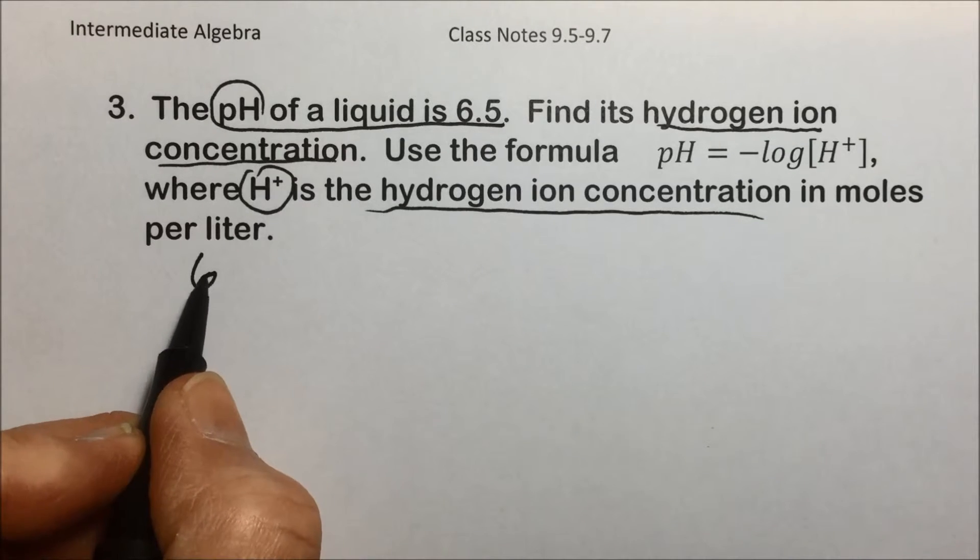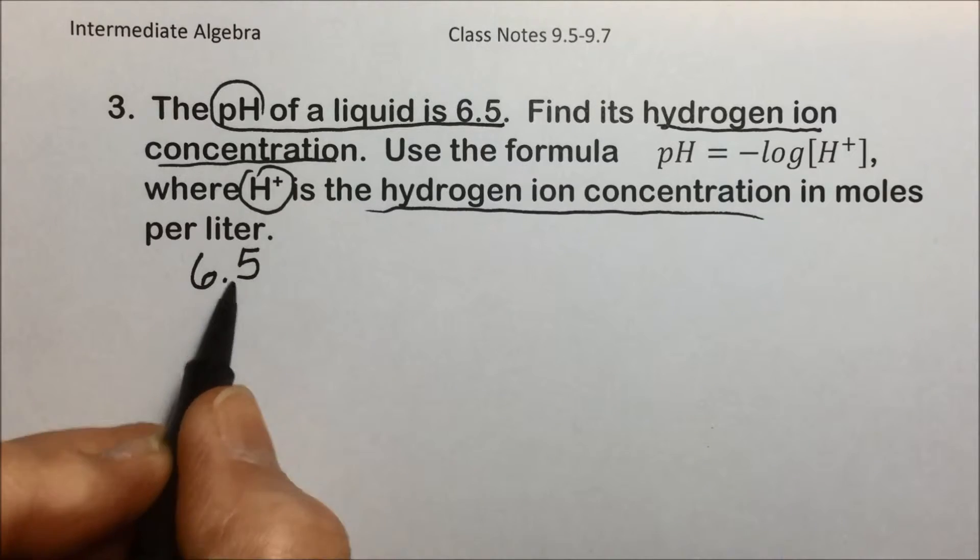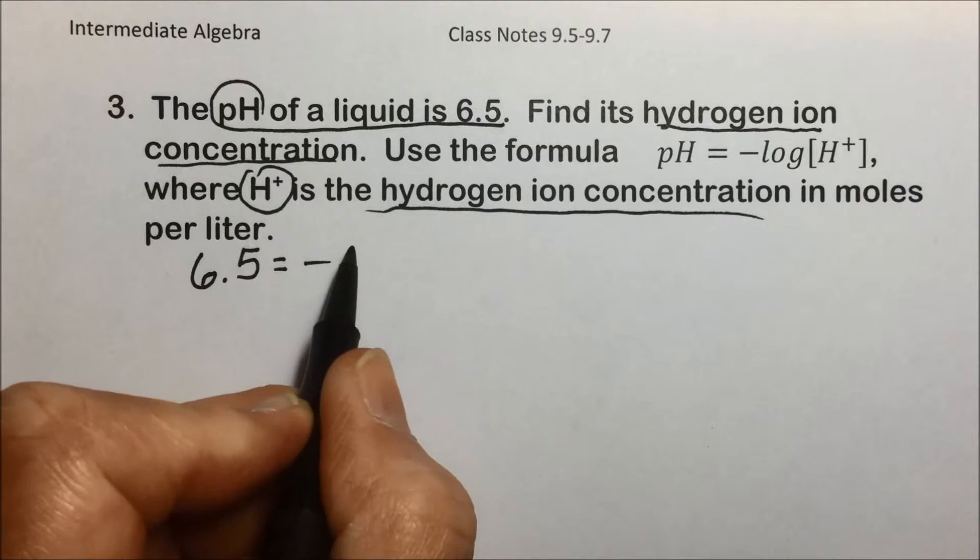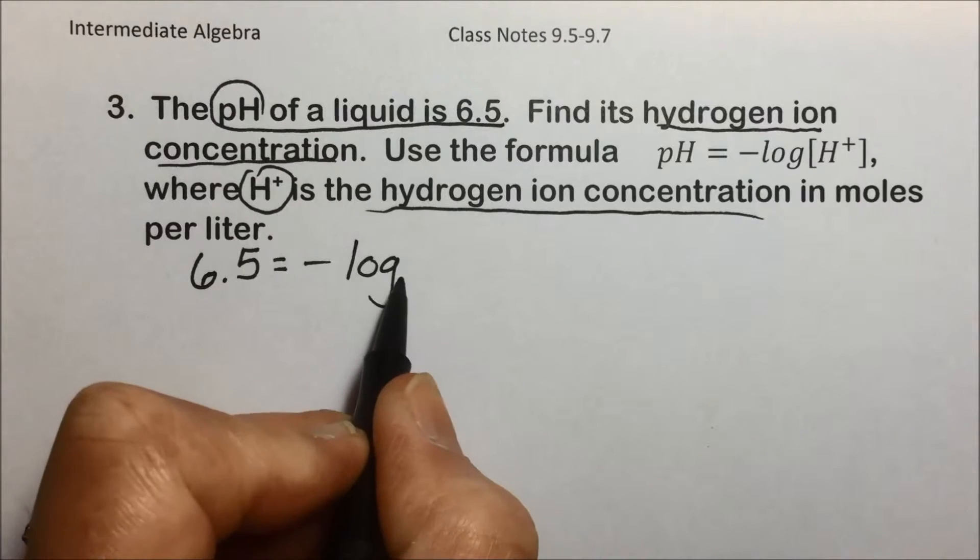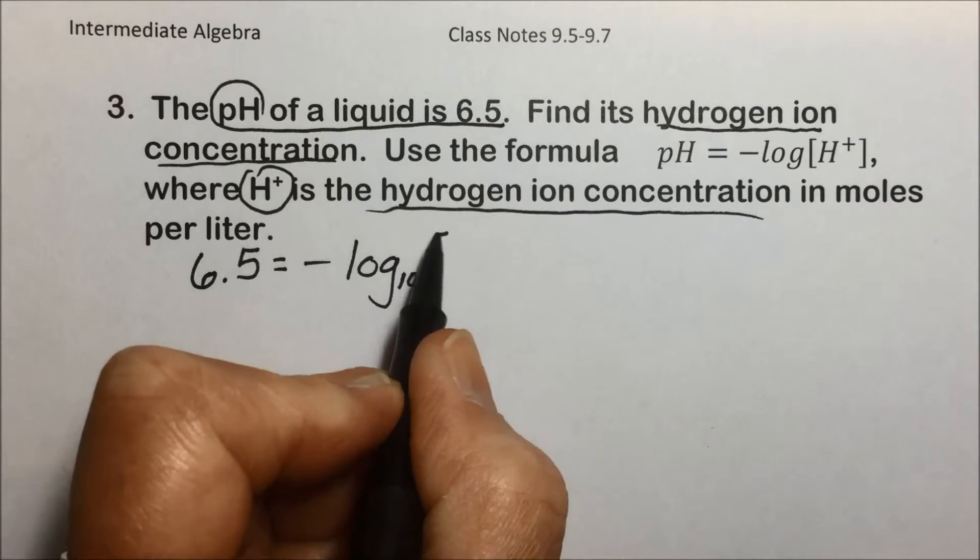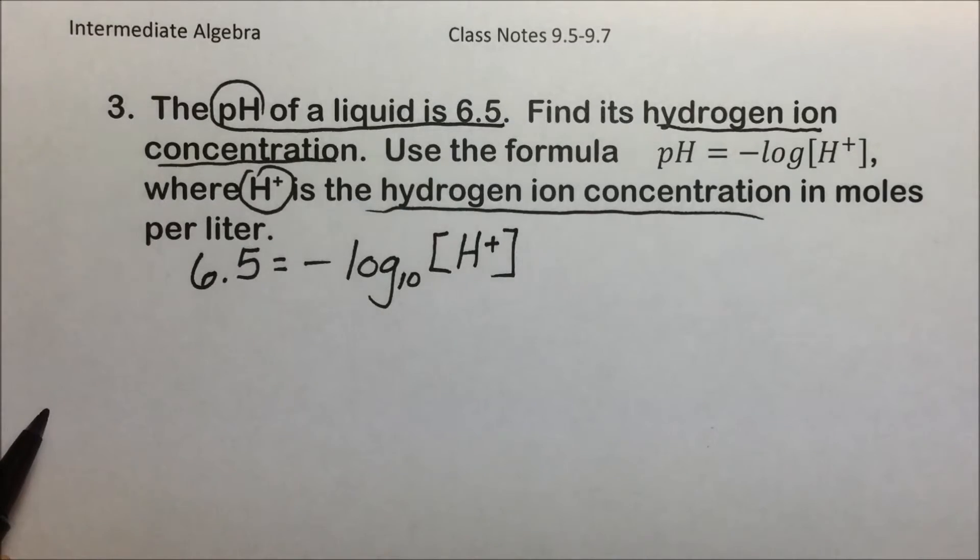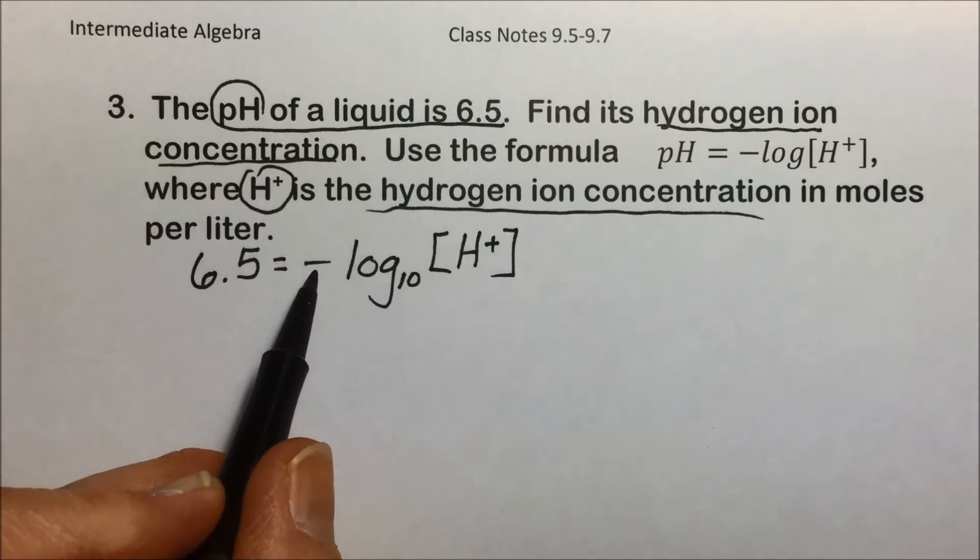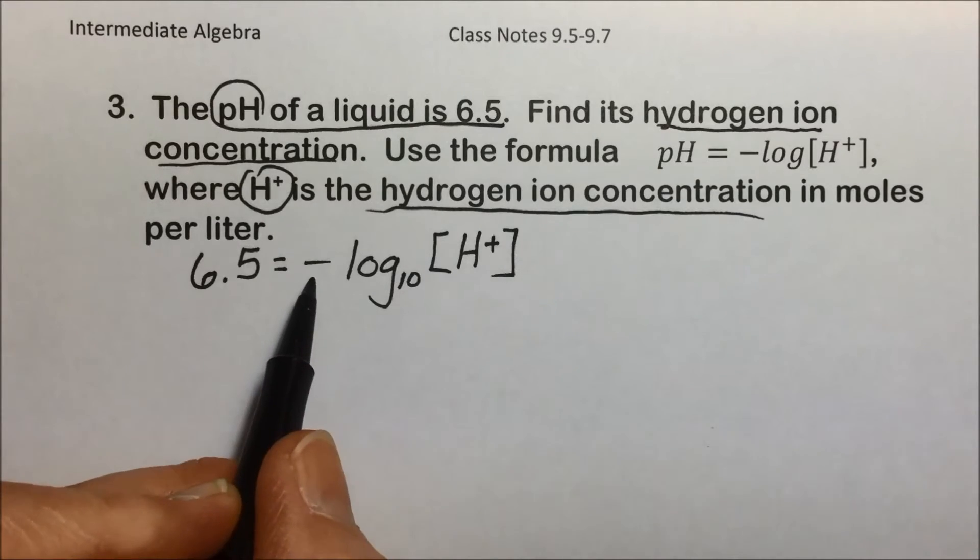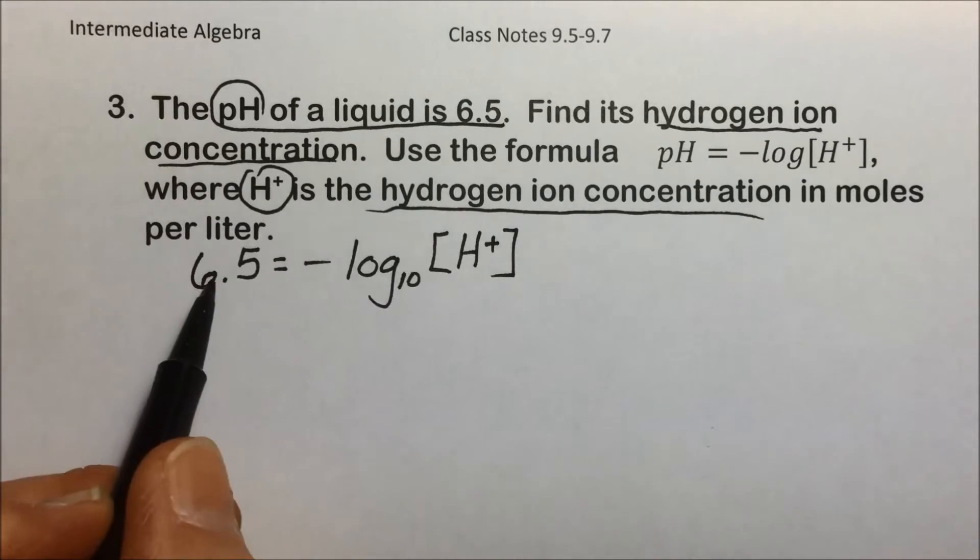So we will replace pH with the given value of 6.5 = -log[H+]. We could take this out and put it in exponential form as a way of solving it. First thing, though, I want to get rid of that negative out in front, so multiply both sides by negative 1.